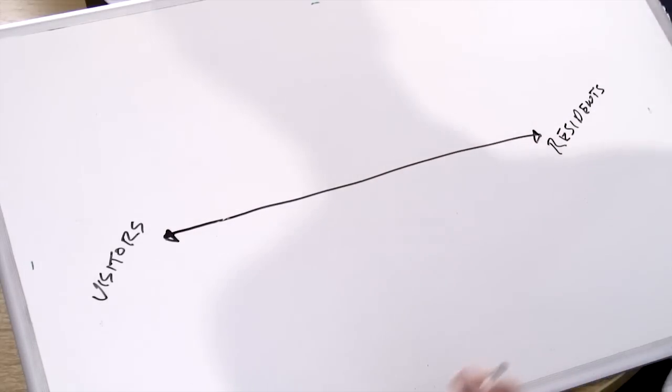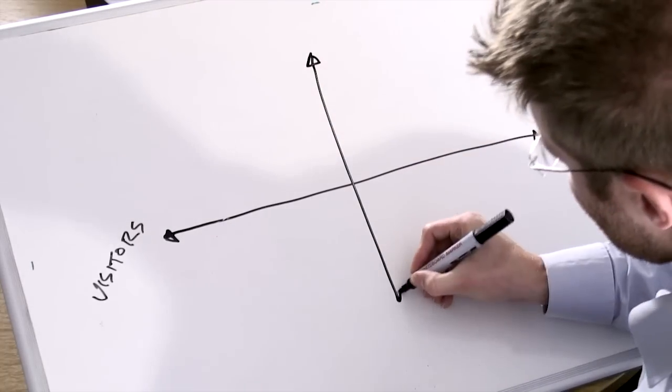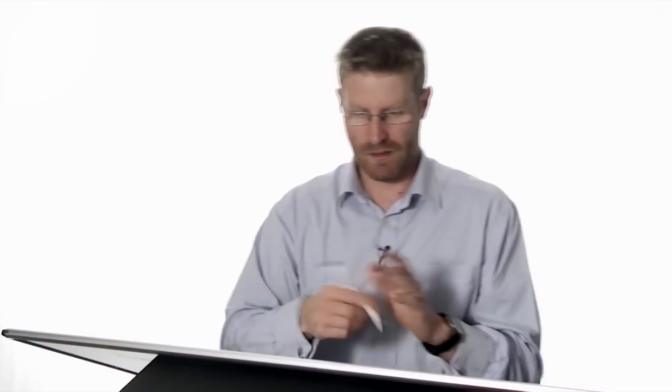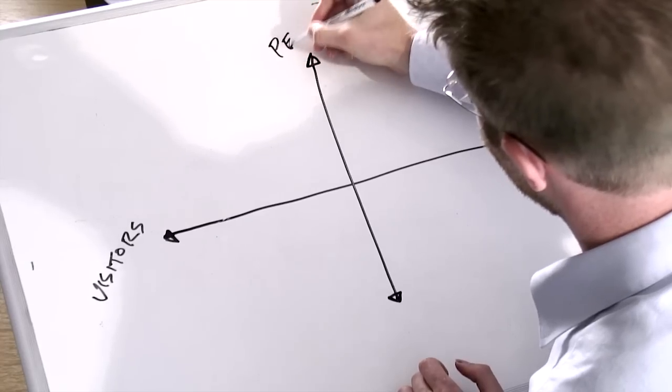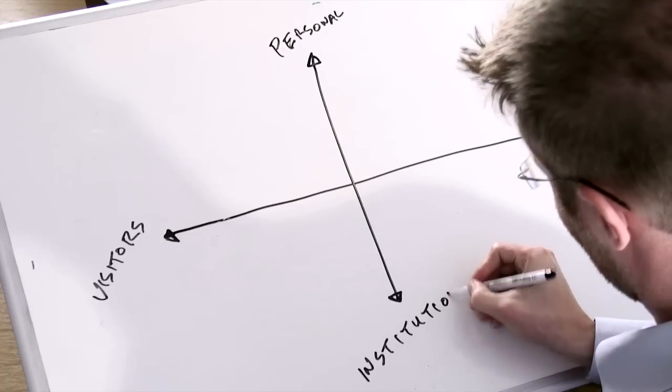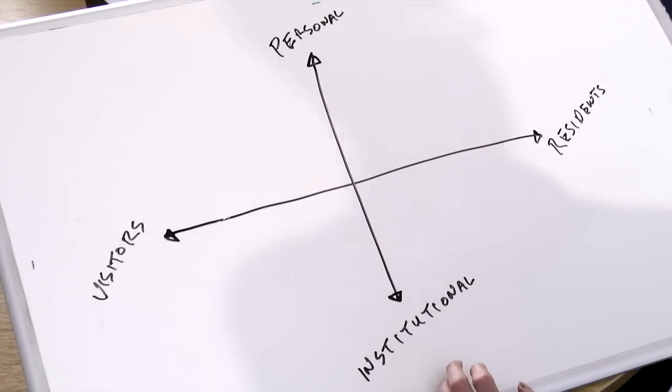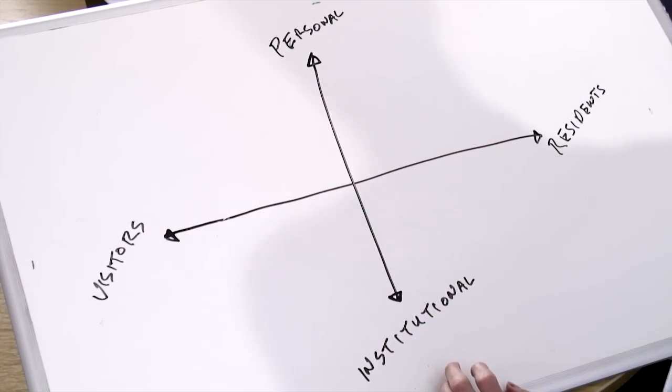Now, what we can do with the continuum is we can add a vertical axis, okay? And in this case, I'm going to write personal and institutional. So, that gives us a grid here that we can work with and we can plot how we engage with the web across these different quadrants. So, for me, this is a simplified version of my engagement, my personal engagement map.